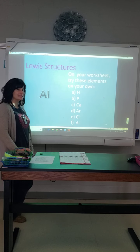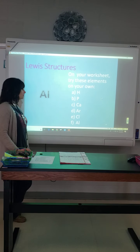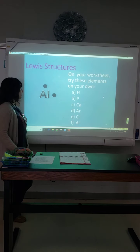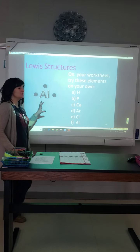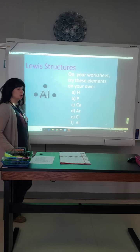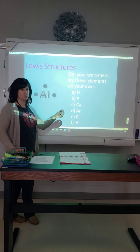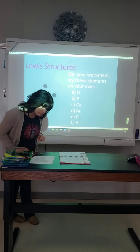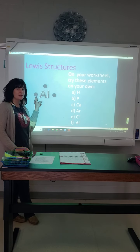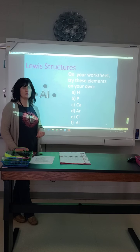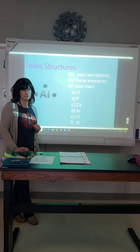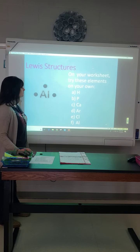Aluminum is a metal on the right-hand side of the metals section — it's in valence group 3, so it has three dots: right, top, left. To reach 8 electrons, it would need to add 5 more or get rid of 3 — obviously it's easier to get rid of 3. Aluminum has an atomic number of 13, so it has 13 protons and 13 electrons. If it loses 3 electrons, it has 13 protons but only 10 electrons. More protons means a positive charge, so aluminum forms a positive-3 ion.